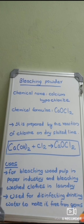Bleaching powder is commonly used in our surrounding areas for cleaning water. The chemical name of bleaching powder is calcium hypochlorite and the chemical formula is CaOCl₂.